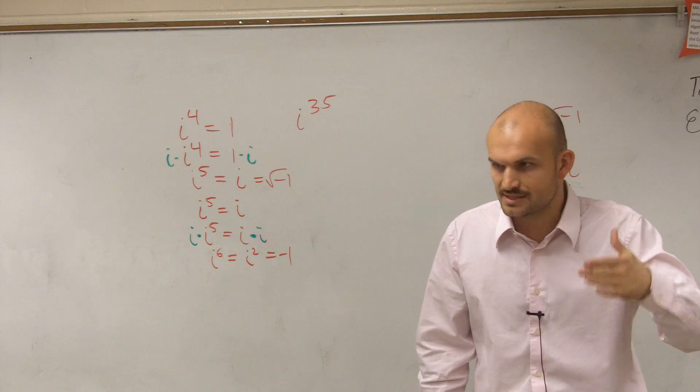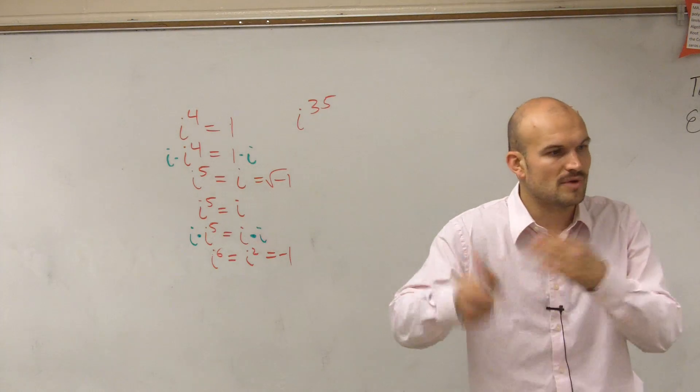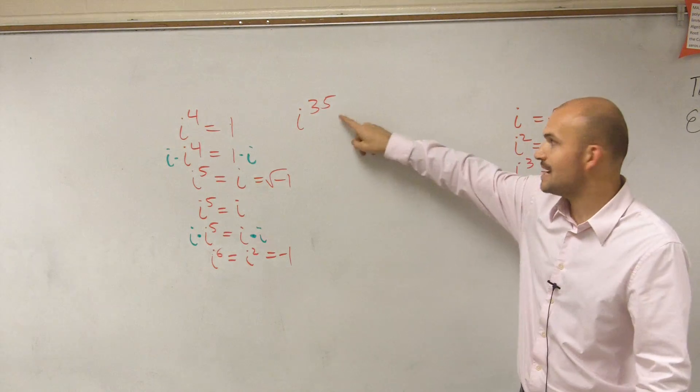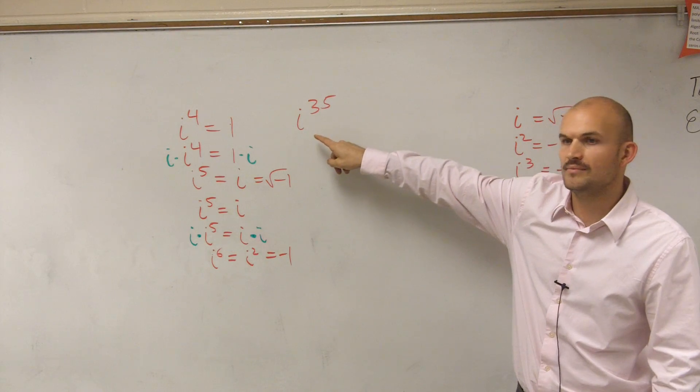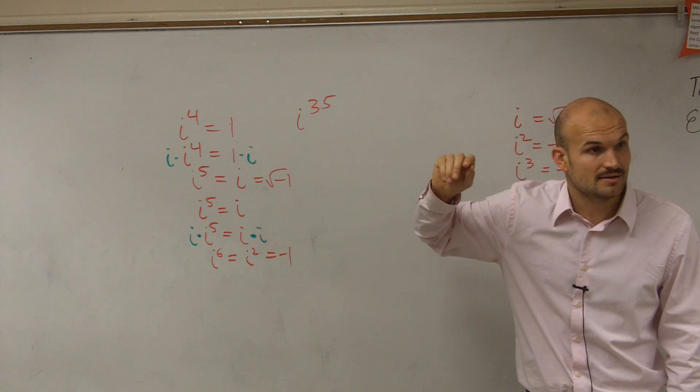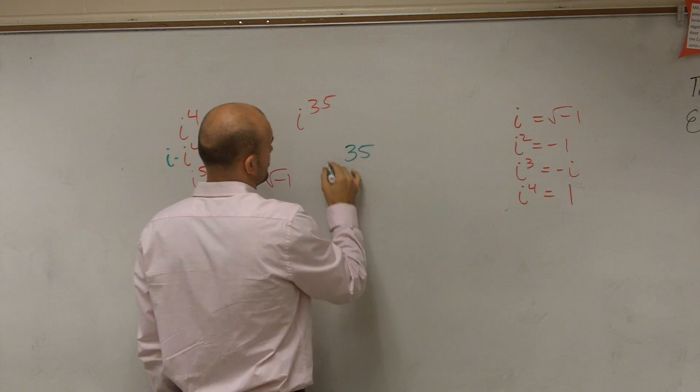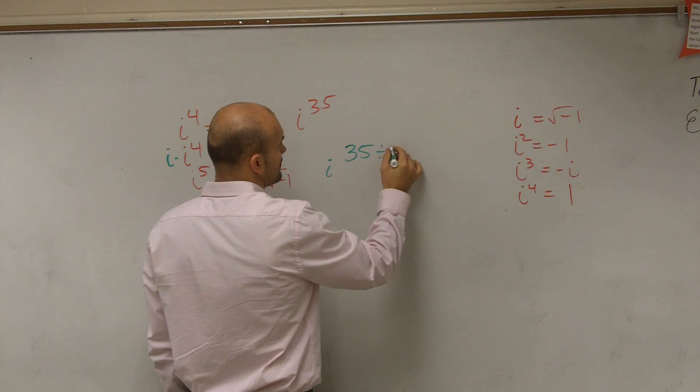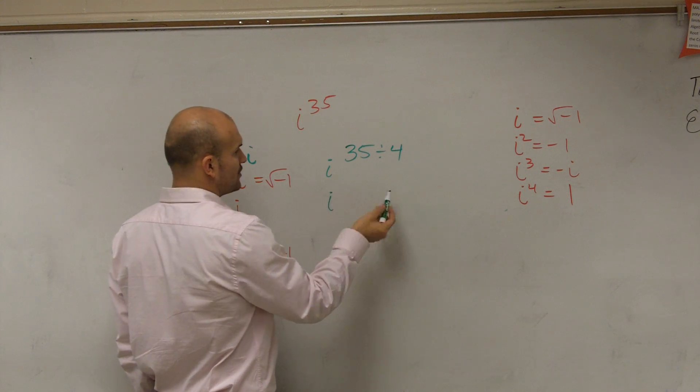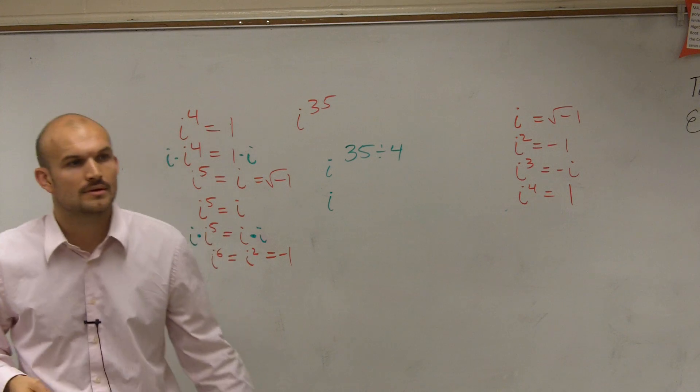After I go up to four, it repeats. So what I can do is I'm going to eliminate all those repetitions out of there. Remember every four it repeats. How many times does it repeat up to 35? It repeats eight times, right? So what you do is you can write 35 divided by four, the number it takes for it to repeat. So it repeats eight times, and then I'm left with the remainder of what? Three.